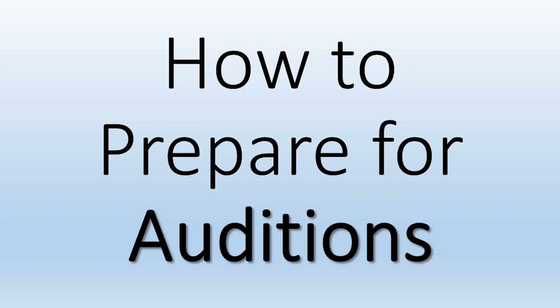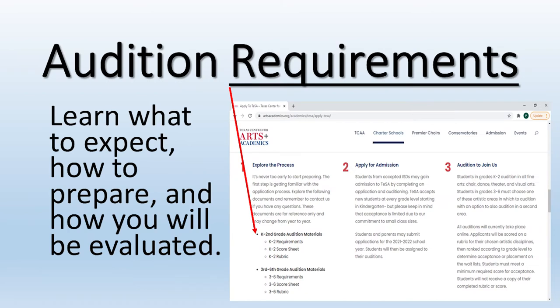Now you will be on the page with everything you need to prepare for auditions. First, start by finding the audition requirements that apply to you, which will either be kinder through second or third through sixth. This is referring to the grade your child will be auditioning for. We will start by looking at the K through second requirements.